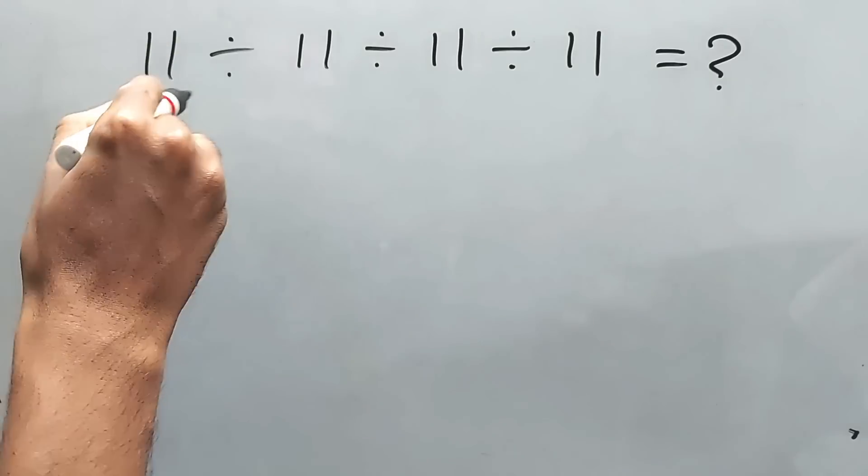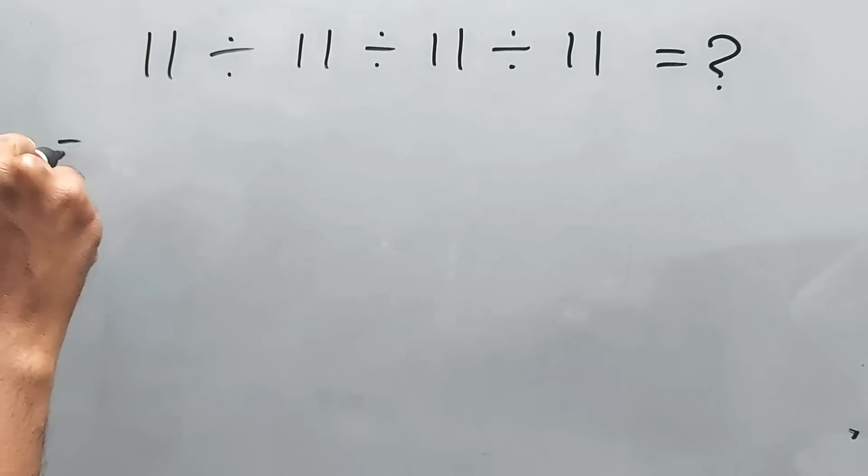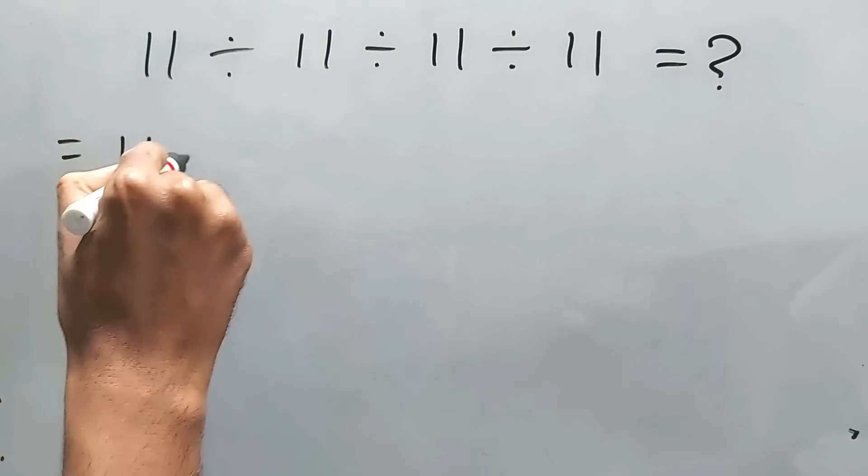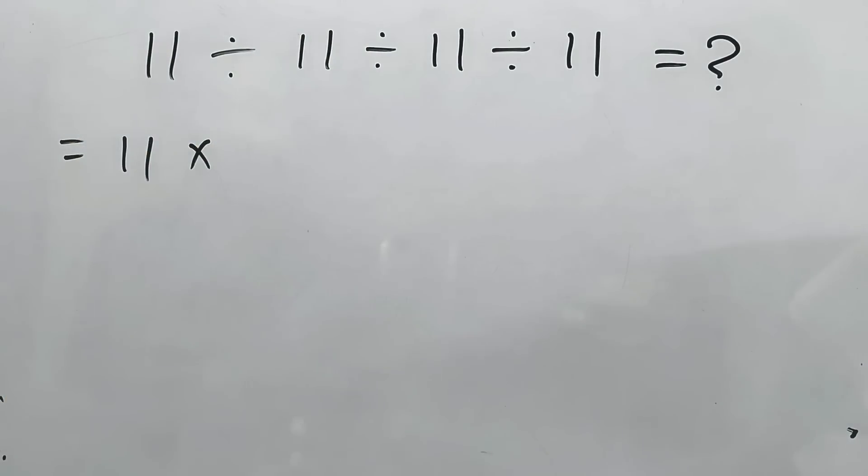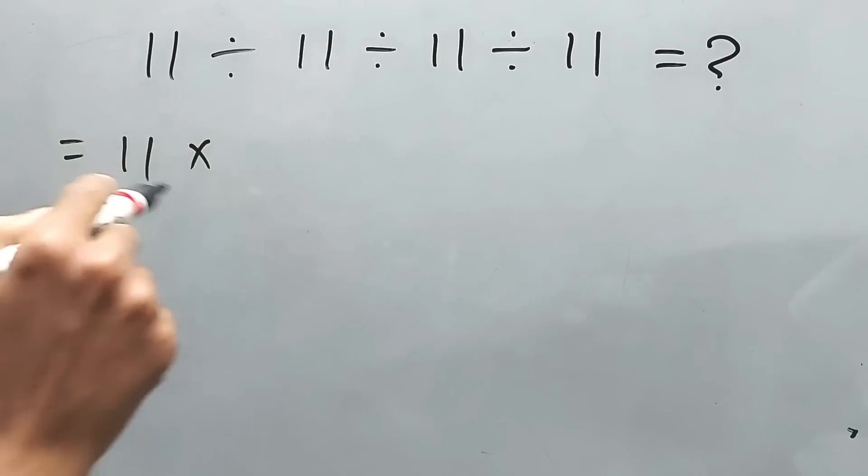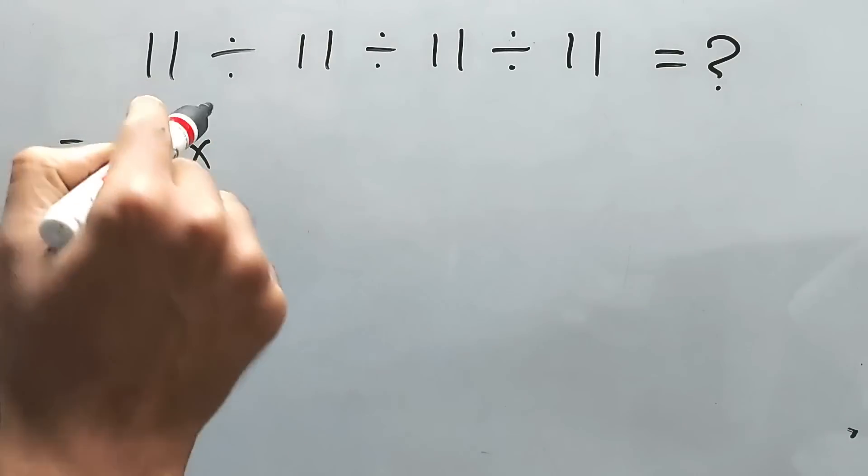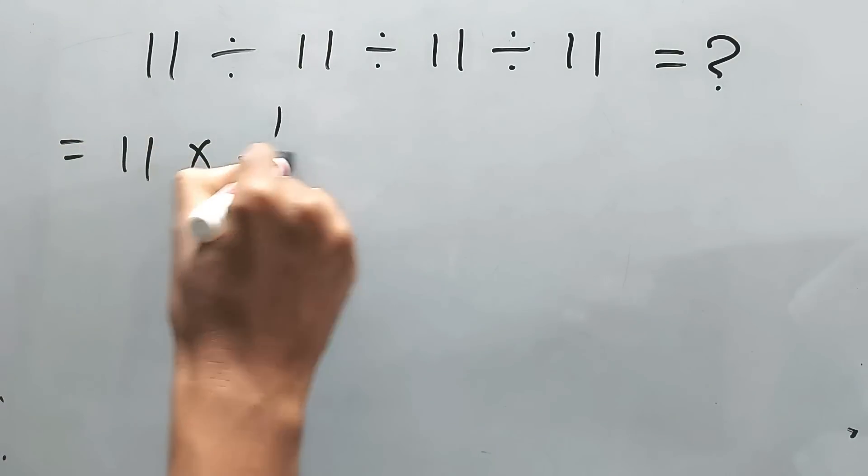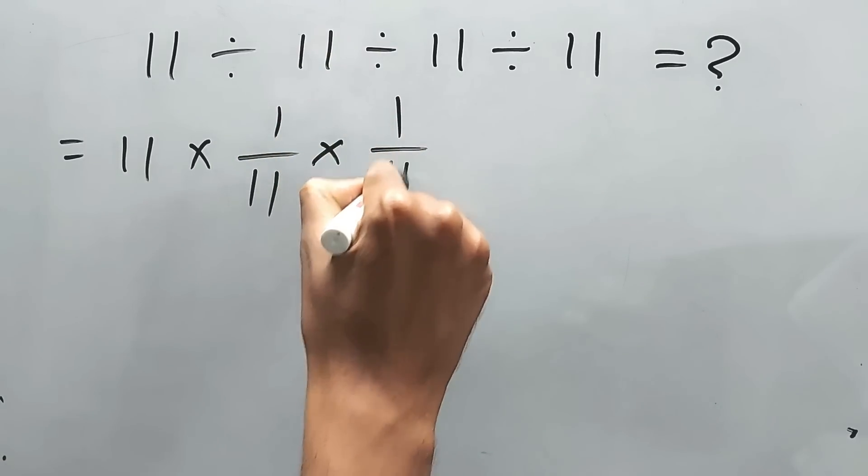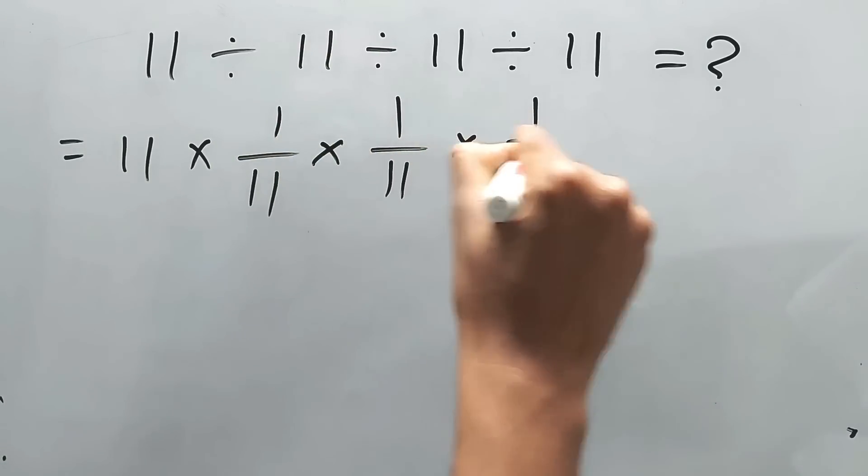It's not a big deal, my friend. Whenever you see this type of thing, just change it. Multiply. Whenever we replace this division sign by the multiplication sign, the number will be the reciprocal. That means 1 by 11, and trust me my friend, it will be the same everywhere.